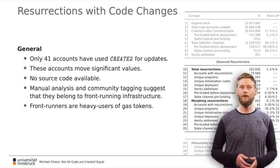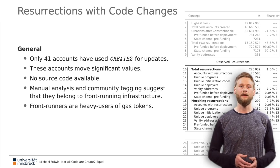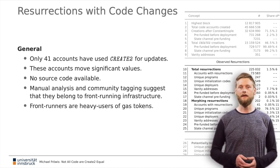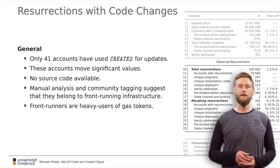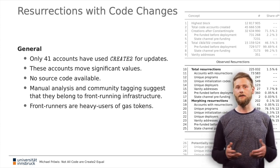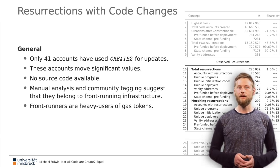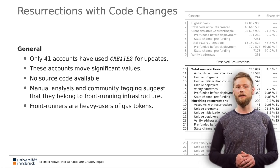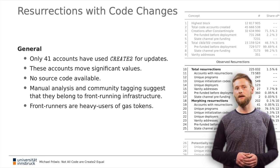We also looked closer at the 41 accounts that changed their code via CREATE2. All accounts are opaque and we found no source code for any of them, but the volume and value of ETH and tokens they handle is significant. Comments on Etherscan and community sources regarding miner extractable value and front-running suggest many of these addresses belong to front-running infrastructure. Many use vanity addresses, indicating tech-savvy users, and we conjecture that the CREATE2 update method makes front-running bots slightly more efficient, requiring less indirection than the proxy pattern.